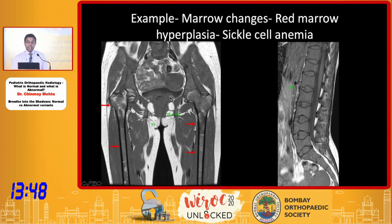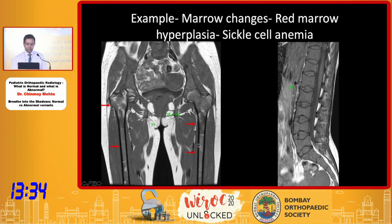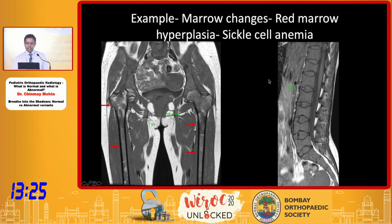Coming to the next example: this is an 18-year-old patient where the fatty marrow is replaced by hypointensity on T1 images. However, this T1 hypointensity is not darker than the muscle — rather it is equivalent or slightly brighter than the adjacent muscle. That is why this is red marrow that has reconverted, replacing the fatty changes. We see this commonly in sickle cell anemia, hemolytic anemia, or stress due to chemotherapy.